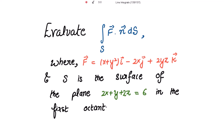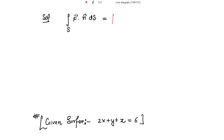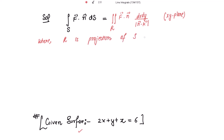To evaluate the surface integral of F⃗ · n⃗ dS, where F⃗ is given and S is the surface of the plane 2x + y + 2z = 6 in the first octant. The surface integral equals the double integral of F⃗ · n⃗, and instead of dS, we write dx dy divided by |n⃗ · k⃗|, where n⃗ is the unit vector normal to surface S. This double integral is over the projection R of surface S on the xy-plane.